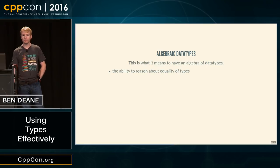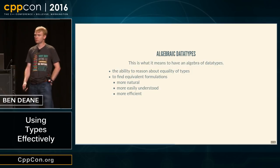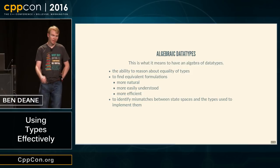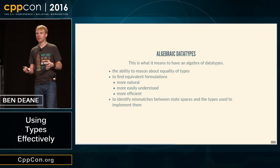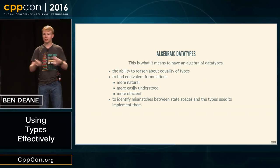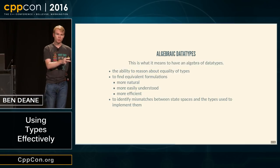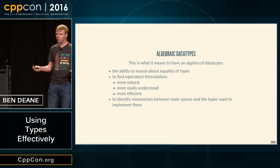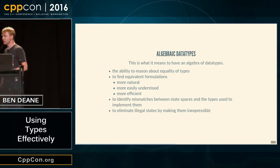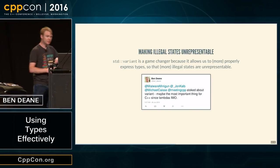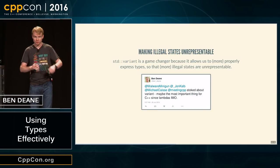I think variant will very soon become a very important tool for proper expression of business logic states. This is one reason why it's important that variant is never empty, or only empty in error state. With a bar struct it's T times 2, with a variant it's T plus T — the same cardinality, but the variant keeps those variables in sync automatically. This is what it means to have an algebra of data types: we can reason about equivalence of types, find equivalent formulations, and crucially, get rid of mismatches between our business logic state space and the types we use. If we make illegal states unrepresentable, we eliminate whole classes of errors. This is why std::variant is a game-changer, probably the most important thing since lambdas.